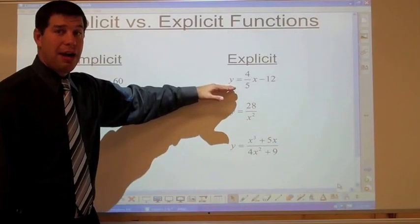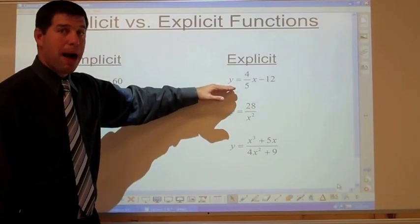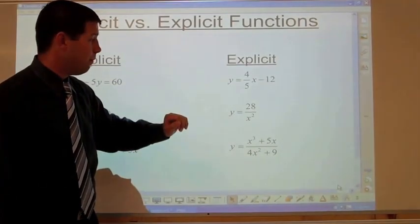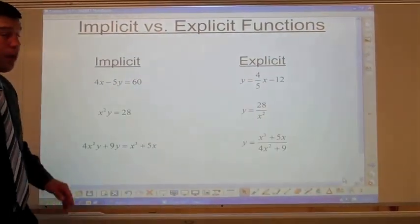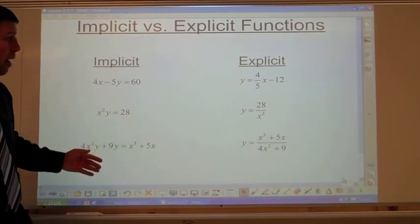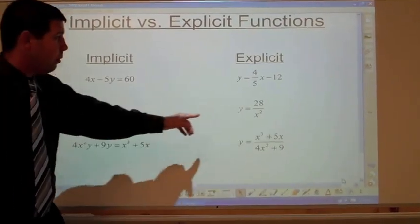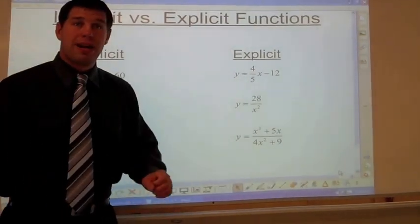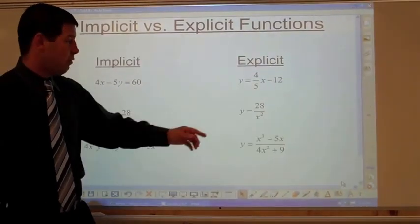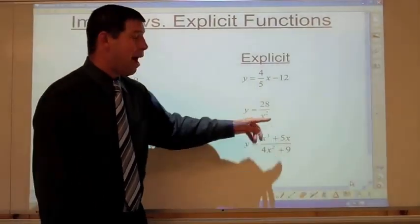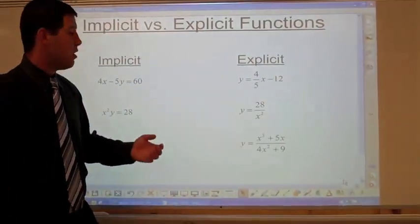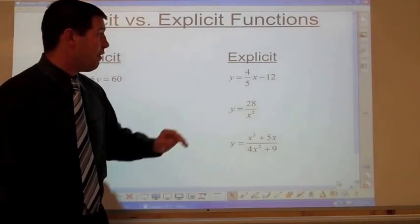We know how to derive this using the power rule and the sum and difference rule. For x squared y equals 28, divide both sides by x squared and you get y equals 28 over x squared. You can either write this as a negative power or use the quotient rule, but you can still find the derivative.